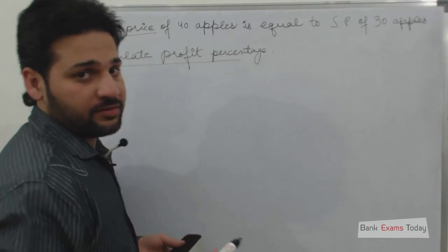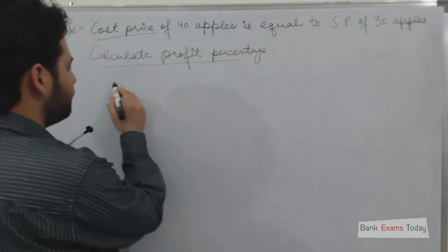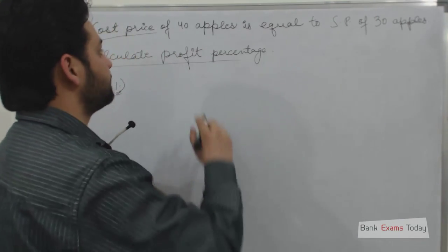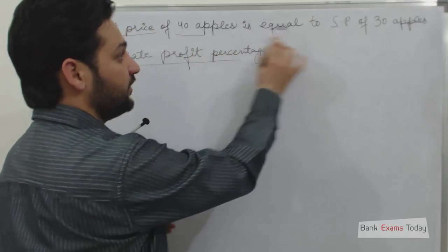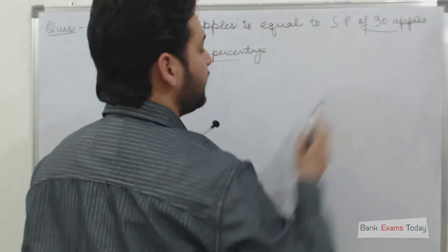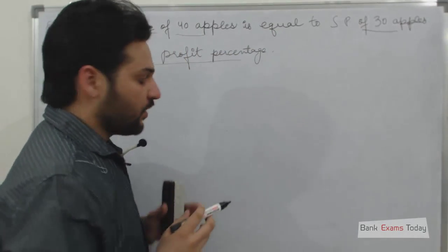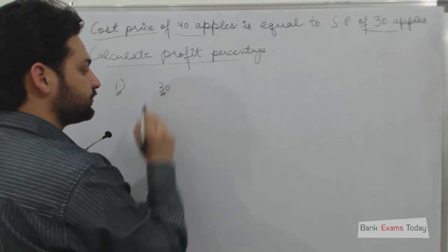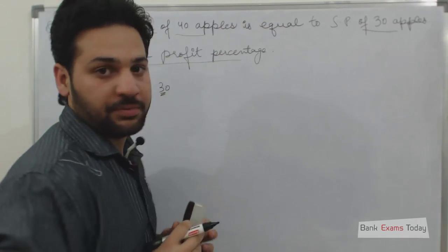There are basically two methods to solve this question. The first one is the simple one, to solve the question in 10 seconds. Cost price of 40 apples is equal to selling price of 30 apples. That means whenever a person sells 30 apples, he saves 10 apples.